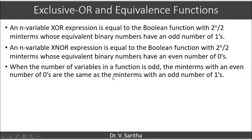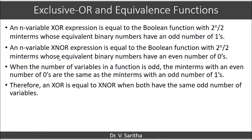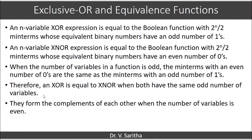When the number of variables is even, XOR and XNOR are different and are complements of each other. Therefore, XOR equals XNOR when both have the same odd number of variables, and they form complements of each other when the number of variables is even.